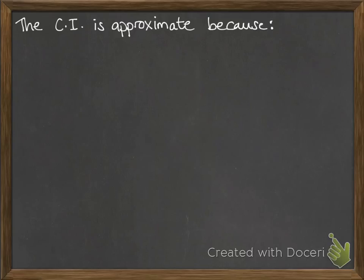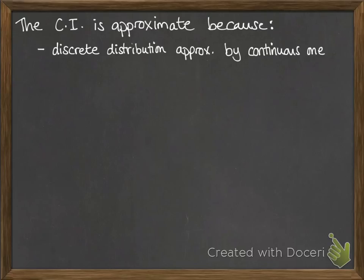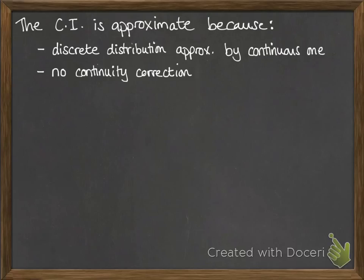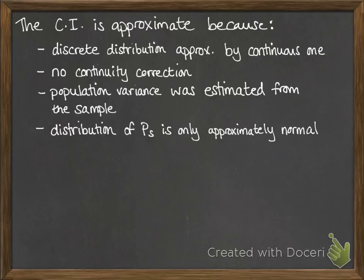We just need to bear in mind that this is an approximate confidence interval, for all the reasons you've come across before, but with some specific ones. We have a discrete distribution being approximated by a continuous one, so that always brings in an element of approximation and some error. We haven't applied a continuity correction — that's because we're talking about N being of such a large size that a continuity correction wouldn't make much difference at all. Since we're estimating and it's approximate anyway, there's not much point in adding that degree of accuracy. You've also got that the population variance was estimated from the sample — it's not the actual population variance — and the distribution of PS is only approximately normal. So all the calculations we get from it, we take with a little pinch of salt, because we know they can vary a bit.